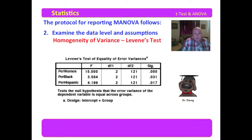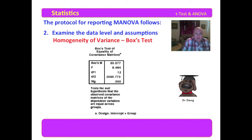You also need to report on the homogeneity of variance. This is Levene's test, and none of these meet a 0.05 threshold. Then Box's M is a test of equality of covariance, and again we're significant there. You never put 0.000 — you would always write less than 0.001.